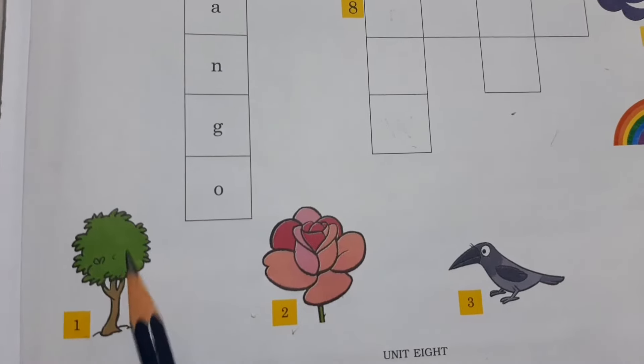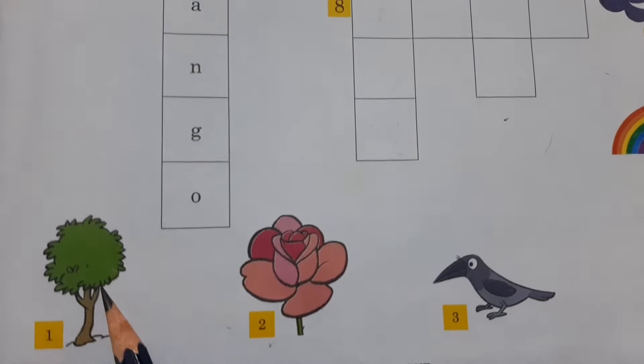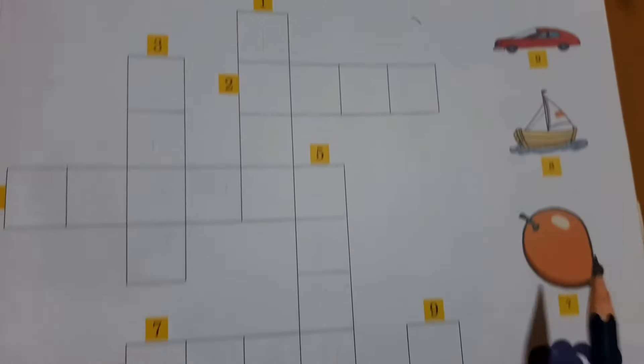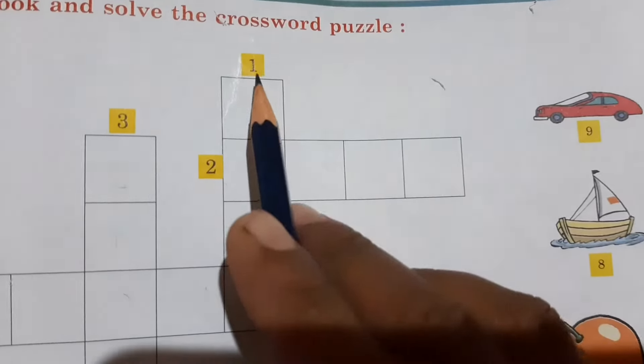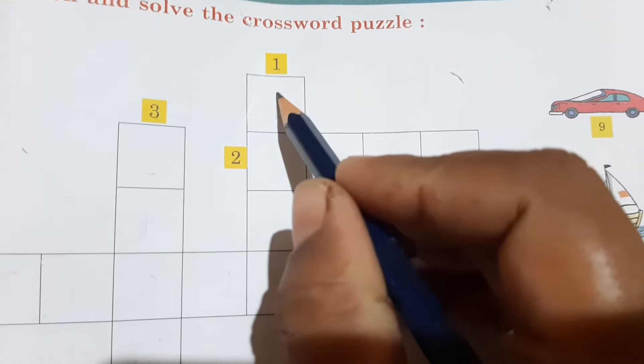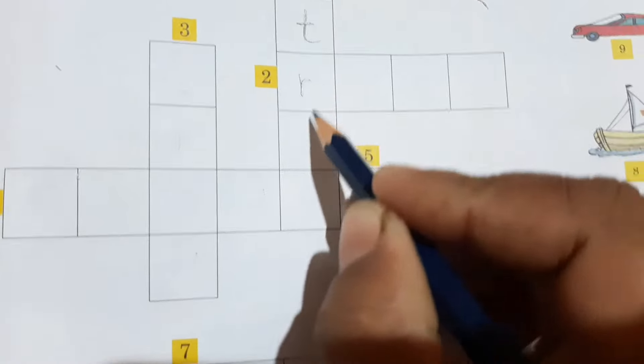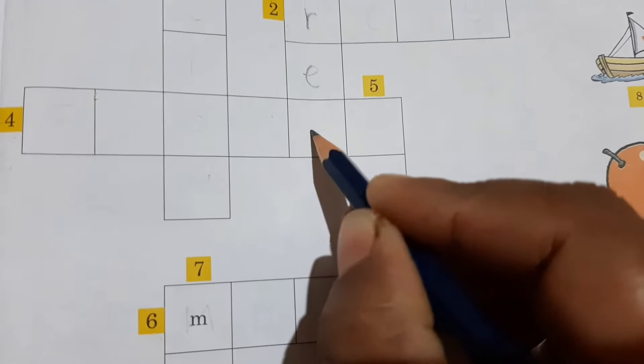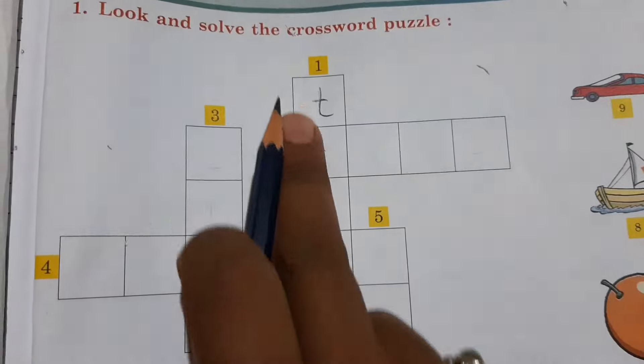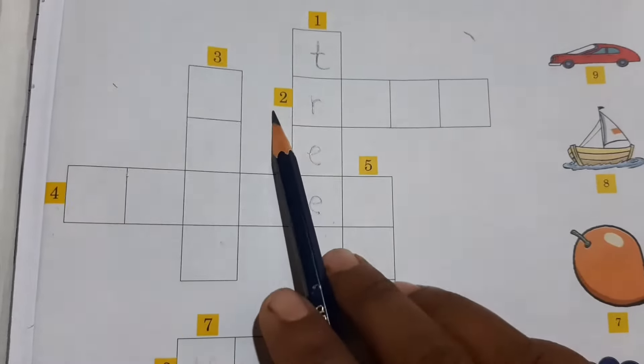Which picture is this? This is a tree. So number one is tree. Here is the number one box, and we have to write the spelling of tree. What is the spelling of tree? T-R-E-E. Like this way, we have to write the spelling of tree: T-R-E-E.